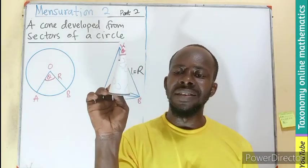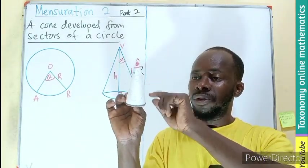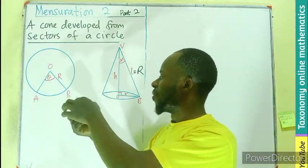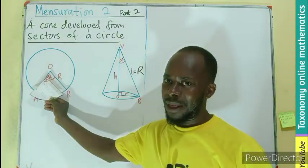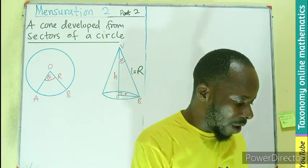This is going to be the slant height. The slant height was the radius. So this is for the minor, it is the cone. This is what we are seeing here formed from this sector. You can see that the radius from here become the slant height.